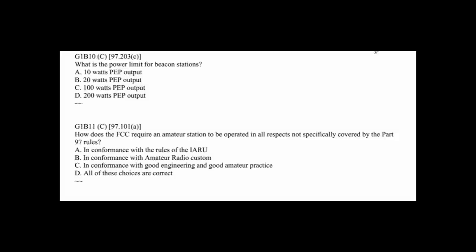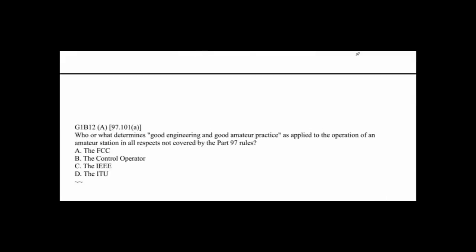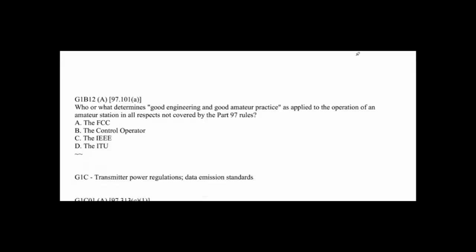G1B10: What is the power limit for beacon stations? That's 100 watts. Just think about the generic transceiver being used for beaconing — 100 watts. G1B11: How does the FCC require an amateur station to be operated in all respects not specifically covered by Part 97 rules? The answer is C — in conformance with good engineering and good amateur practice. G1B12: Who or what determines good engineering and good amateur practice as applied to the operation of an amateur station in all respects not covered by Part 97 rules? The obvious answer is the FCC — they will make the determination.